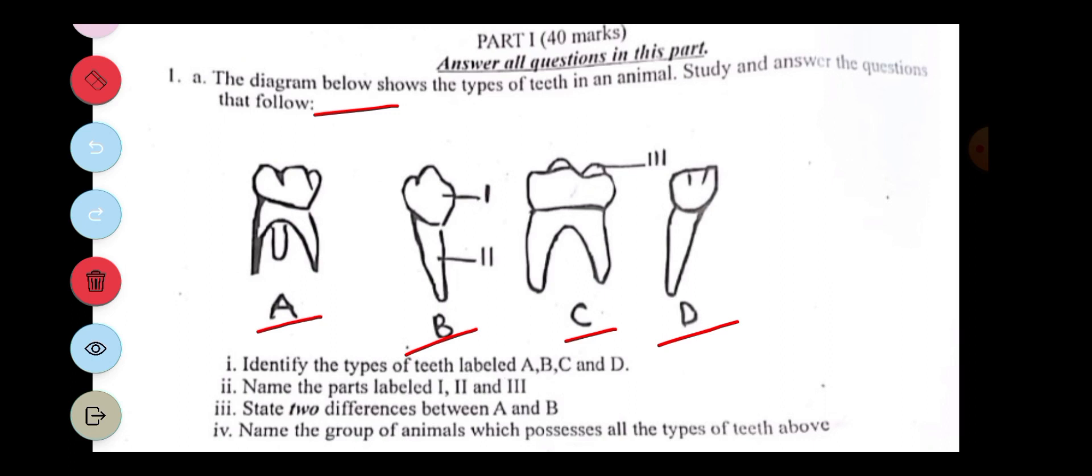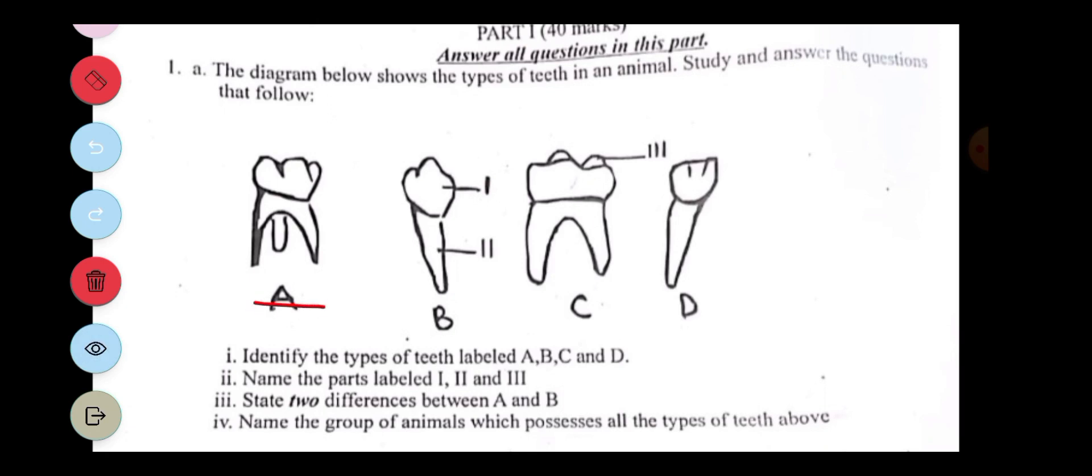Of what you are seeing. So it says identify the types of teeth A, B, C, and D. Now A and C look similar, but I'll help us differentiate. A is called the molar. Let's use the initials: B is canine, C is premolar, then D is incisor. Now how am I able to differentiate between them? The molars have...